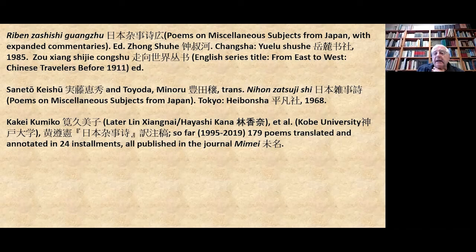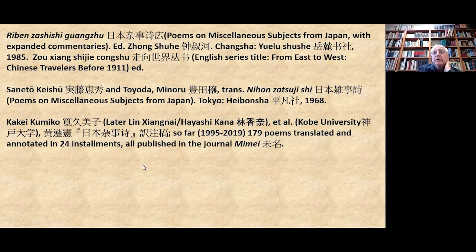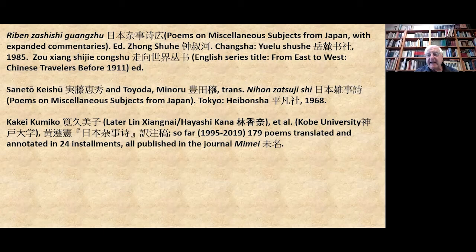A Japanese translation of all 200 poems plus those only in the 1879 edition was published by Heibansha — one of the largest Japanese publishers — first in 1943 and still in print. More recently, beginning in 1995 and continuing to this day, a group at Kobe University consisting of both Chinese and Japanese scholars at the Department of Chinese Literature publishes installments in a local journal called Mimei (Weiming). These are the three works I use as secondary literature helping me in my work.